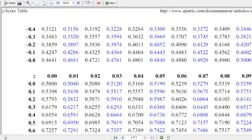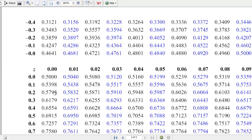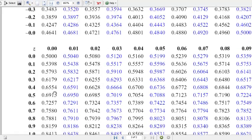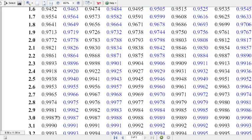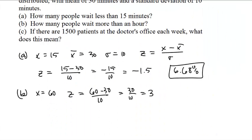And for the positive numbers, the hundredths place being 0, as the first column, we just go down to 3, and here it is, 99.87. So that is 99.87 wait one hour or less.